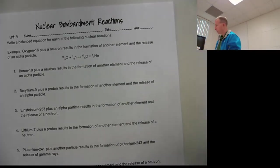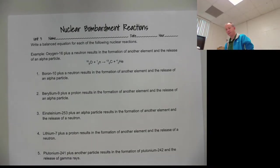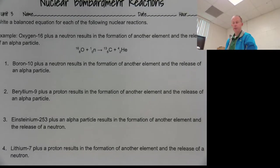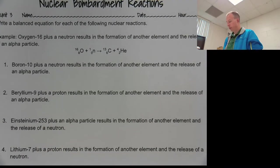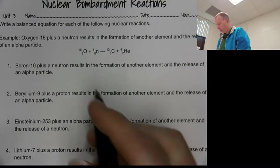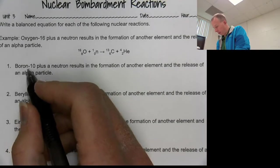So let's go through and just do a couple of these. So first, we look at this one, it says boron-10 plus a neutron results in the formation of another element and the release of an alpha particle. Now, the way we're going to be doing this, we are going to be writing the stuff on the left side of the equation first. So we're going to have to write out boron-10.